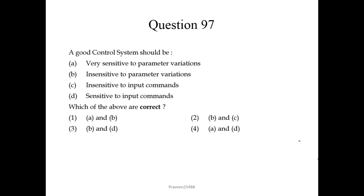Question 97. A good control system should be insensitive to parameter variations, to avoid unwanted responses, and sensitive to input commands, in order to control the response of the system. So options B and D are correct — the third combined option is the answer.